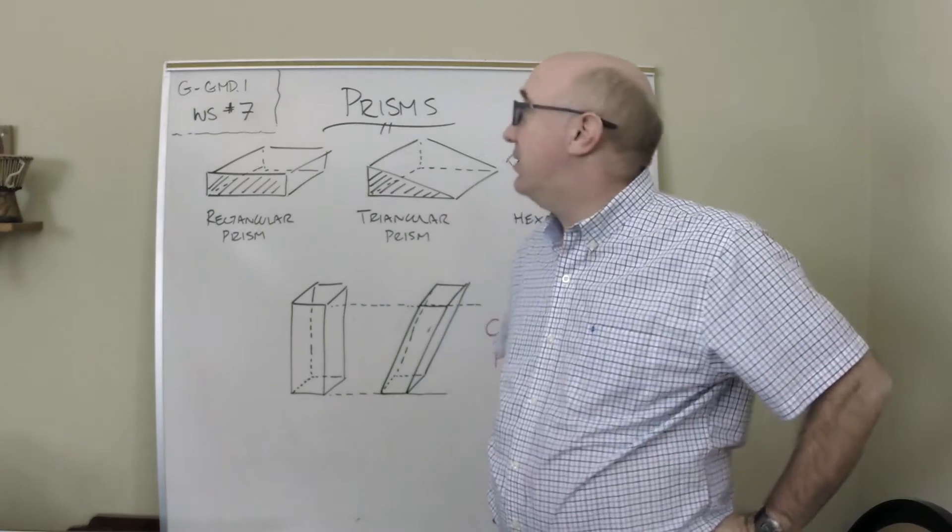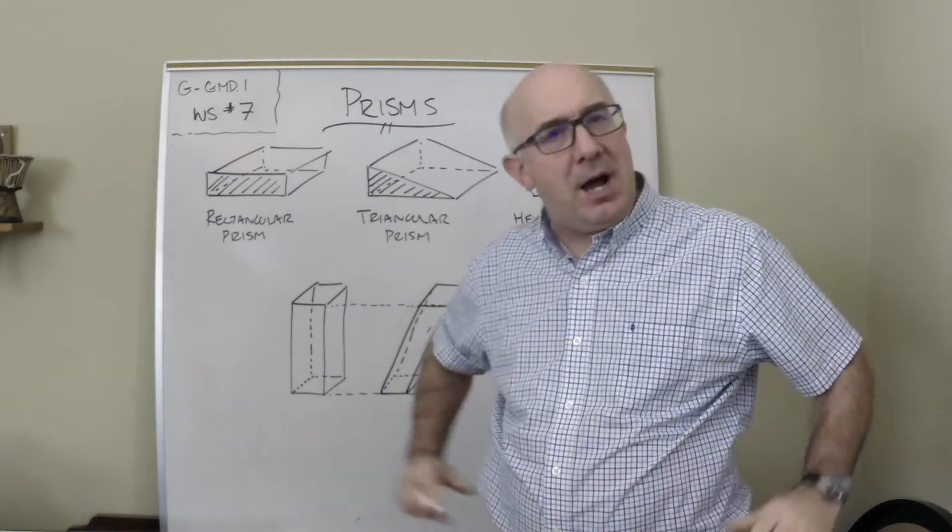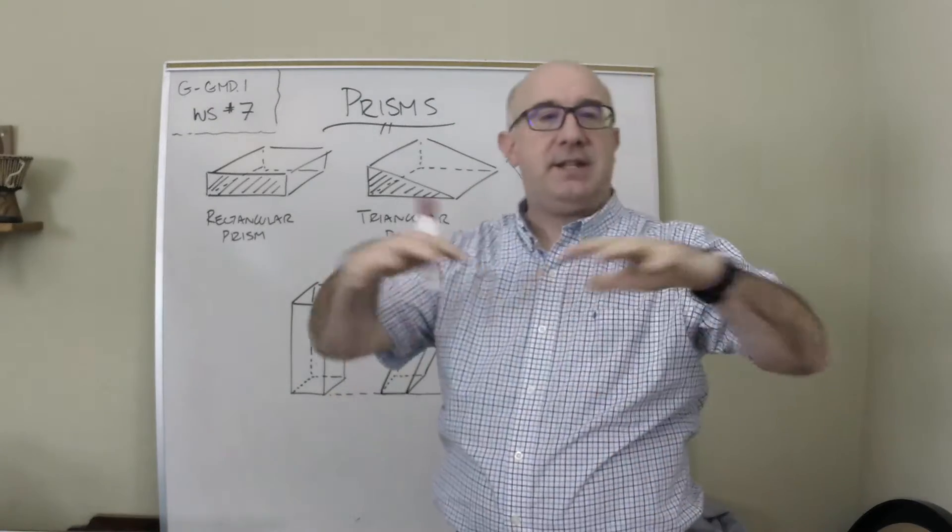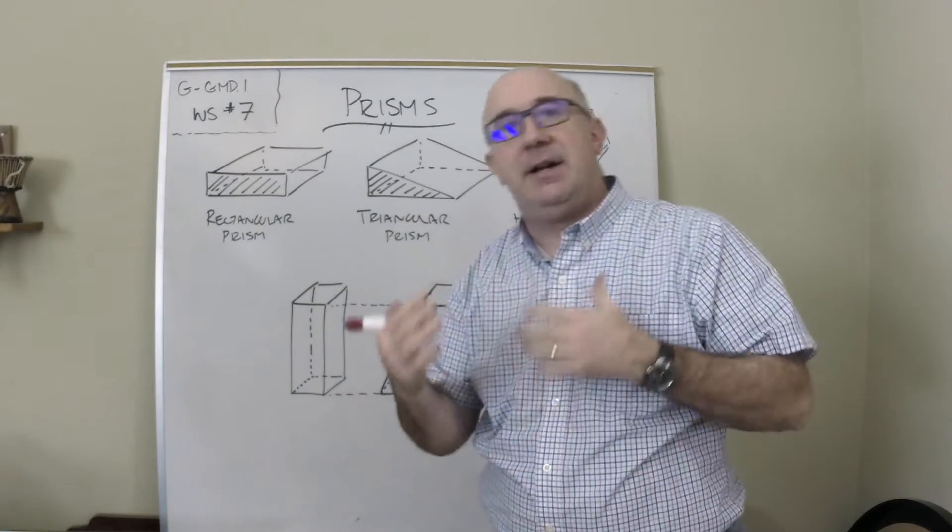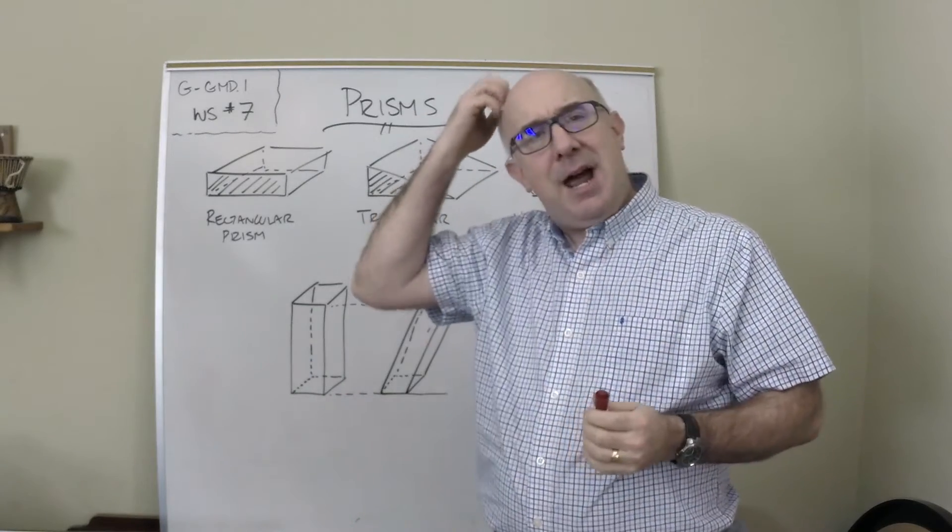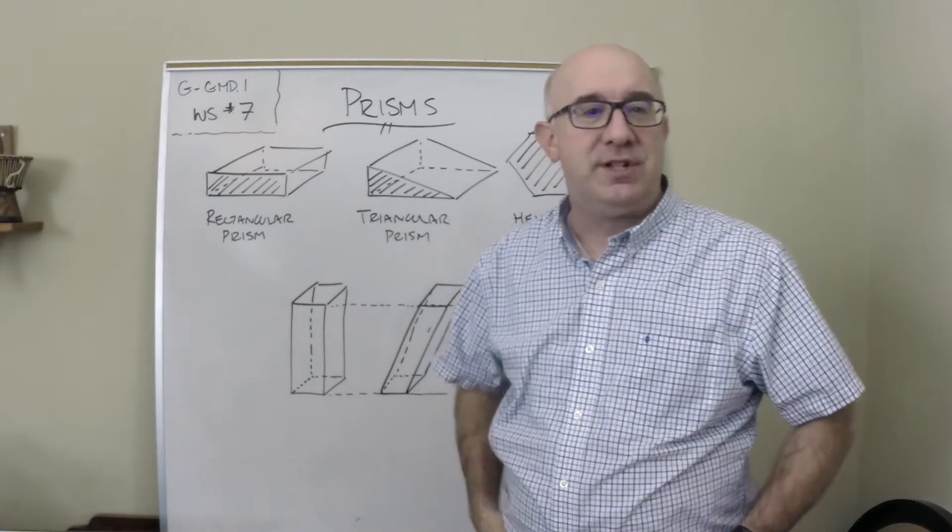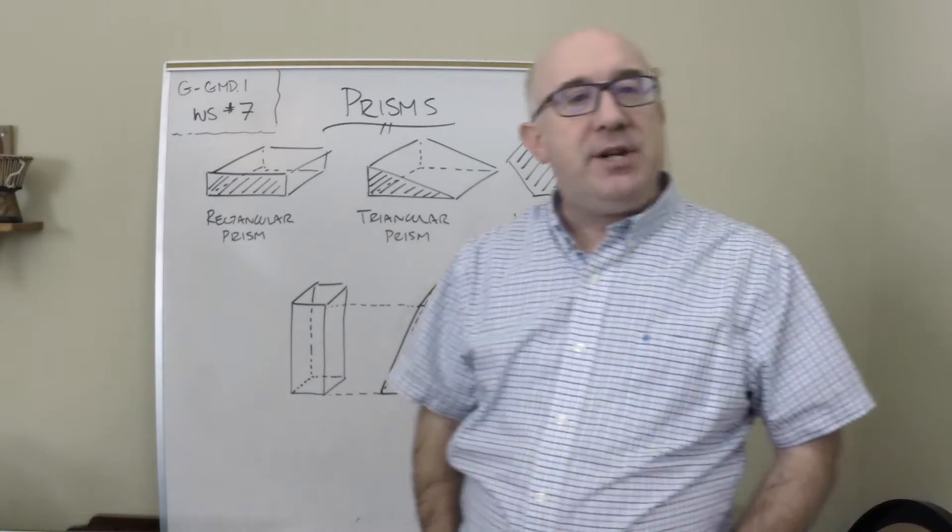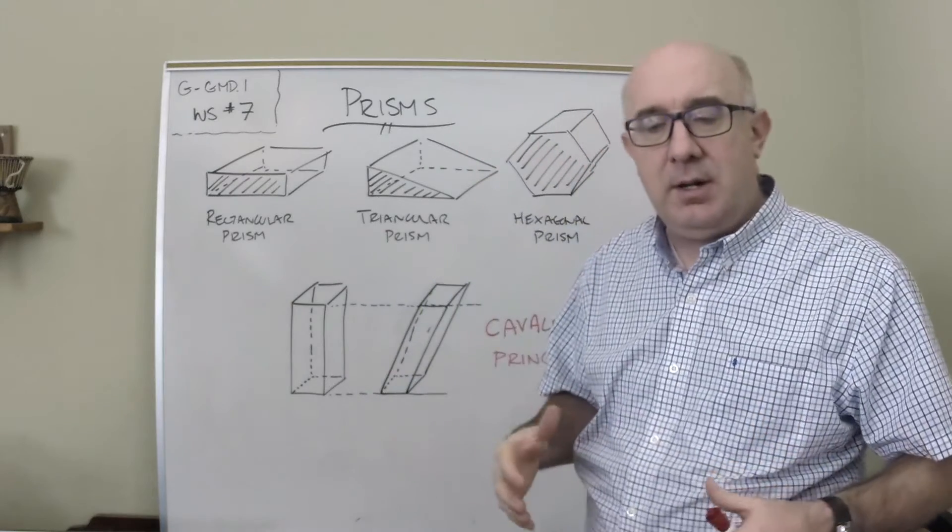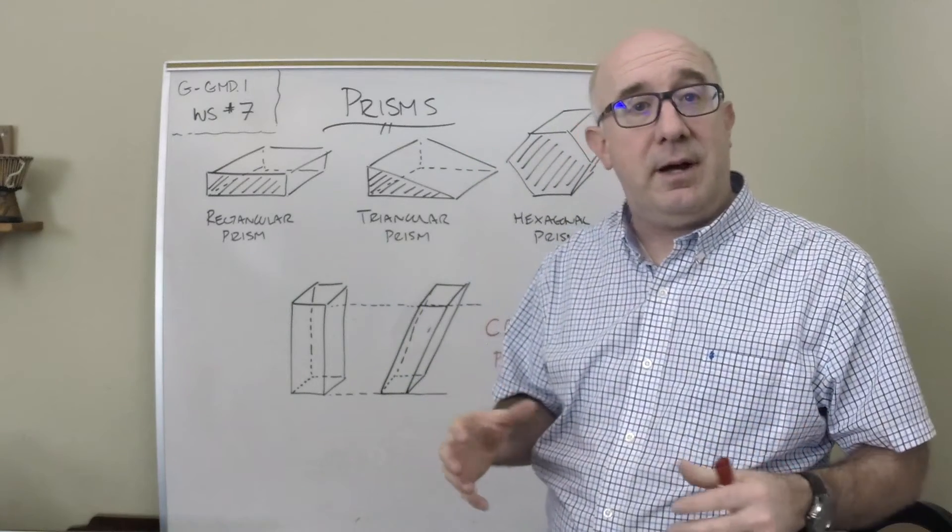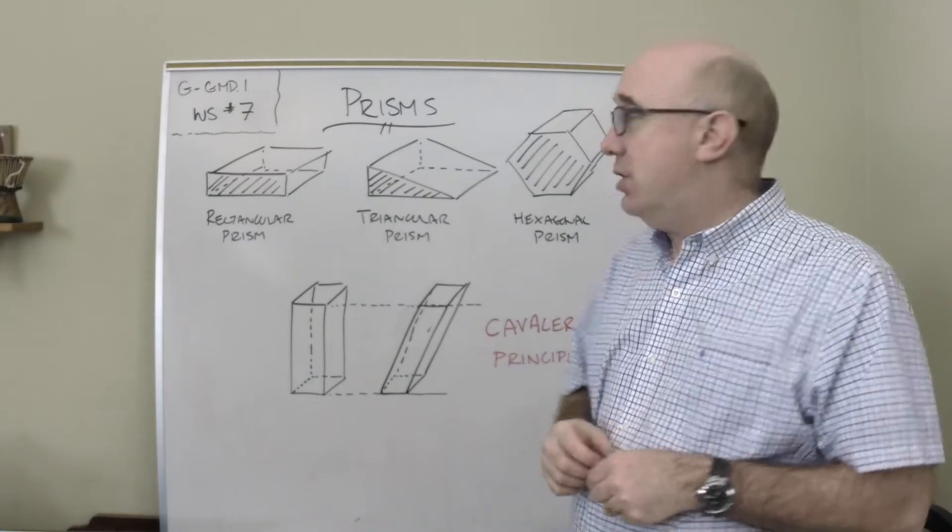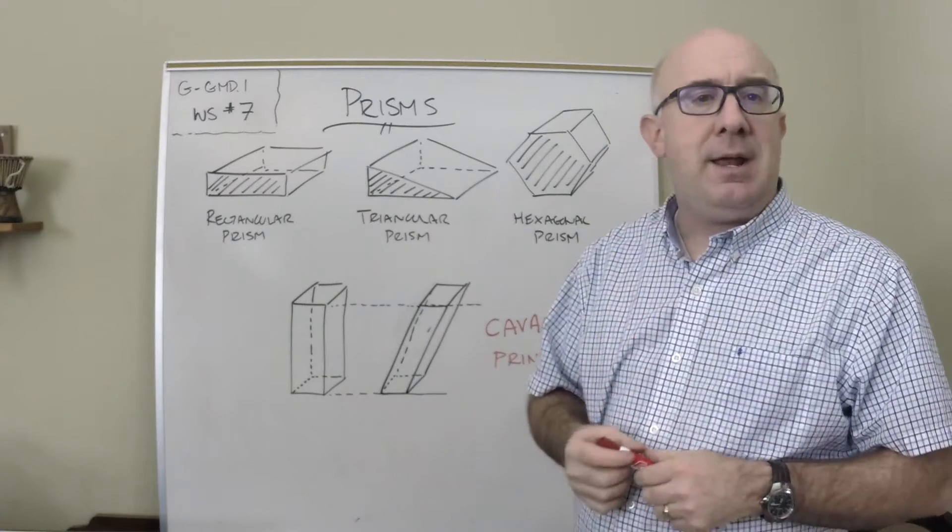Alright, let's take a look at Worksheet 7, which is now the beginning. We've set the stage of area and those relationships, and now we're beginning to build to a three-dimensional world, which is volume. In preparation for that, they want us to think about a particular type of shape or solid known as the prism.